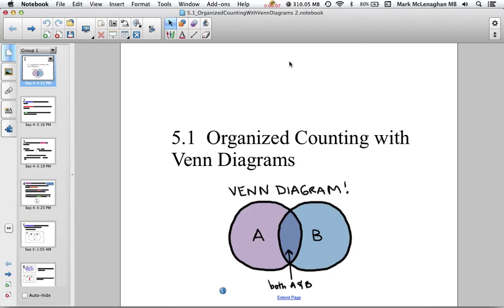Welcome back to Data Management. Today we're going to start Chapter 5. Chapter 5 is all about combinations, which is another option of combinatorics. So far we've covered Chapter 4, which is permutations.